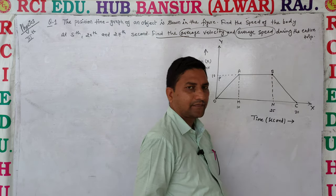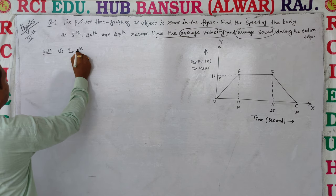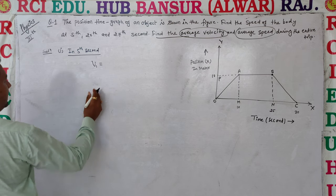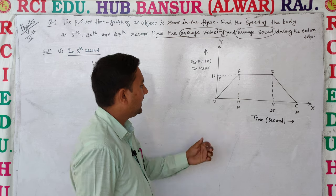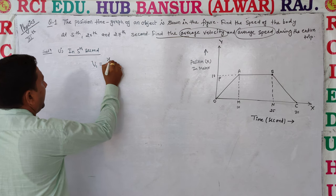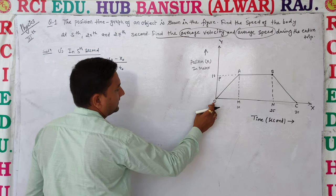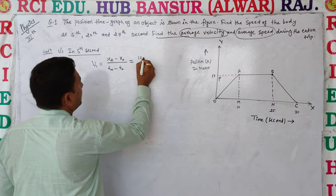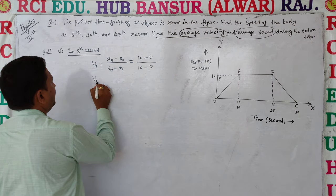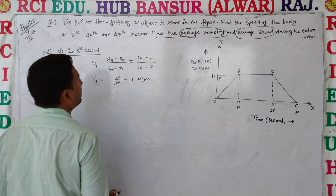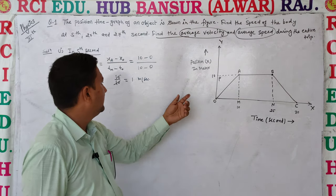Find the average velocity and average speed during the entire trip. For the speed at the 5th second, let v1 be the speed. The distance is (x_m - x_0) divided by time (t_m - t_0). Here x_m is 10 meters, x_0 is 0 (origin), t_m is 10 seconds, and t_0 is 0. So v1 = 10 / 10 = 1 meter per second. The body at the 5th second is moving at 1 m/s.